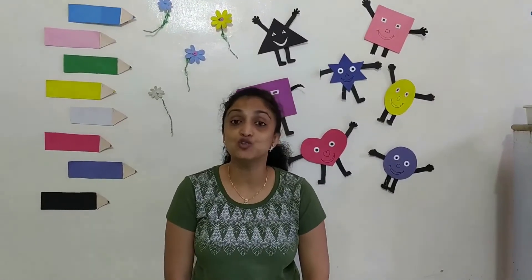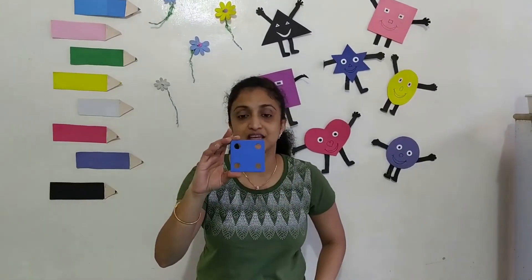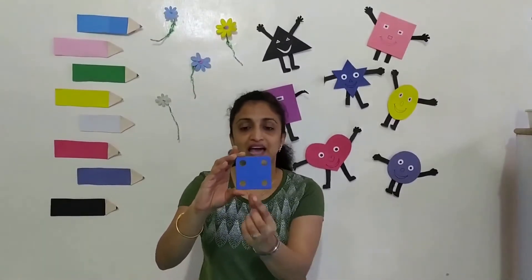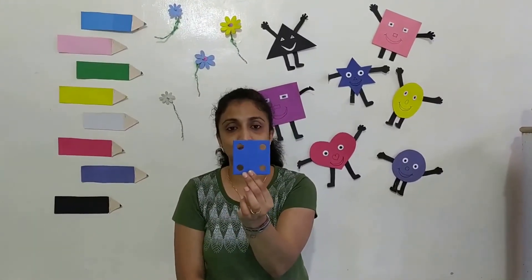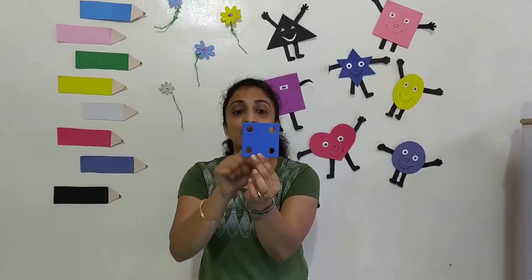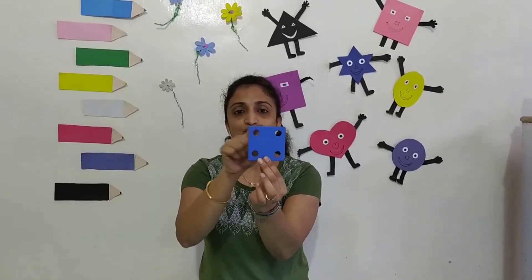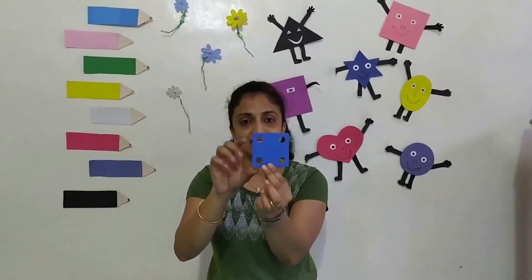Now let's learn about shapes. What do we have here? What shape is this? This is a square shape. And how many sides does a square have? A square has four sides, four equal sides. Square shape.